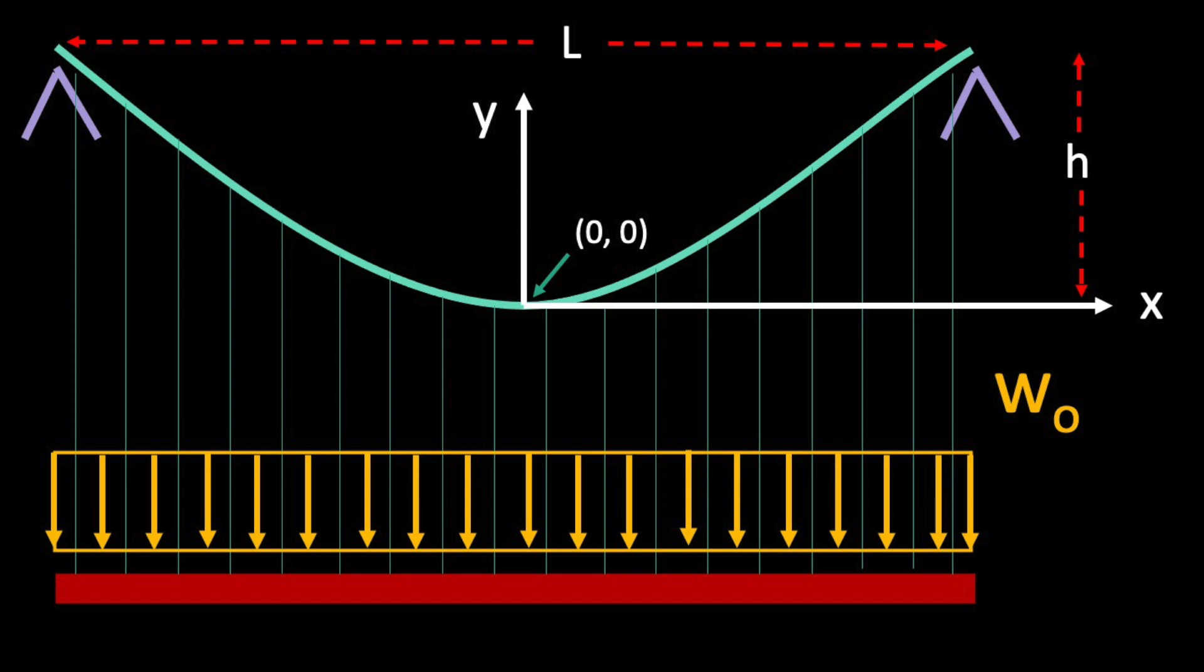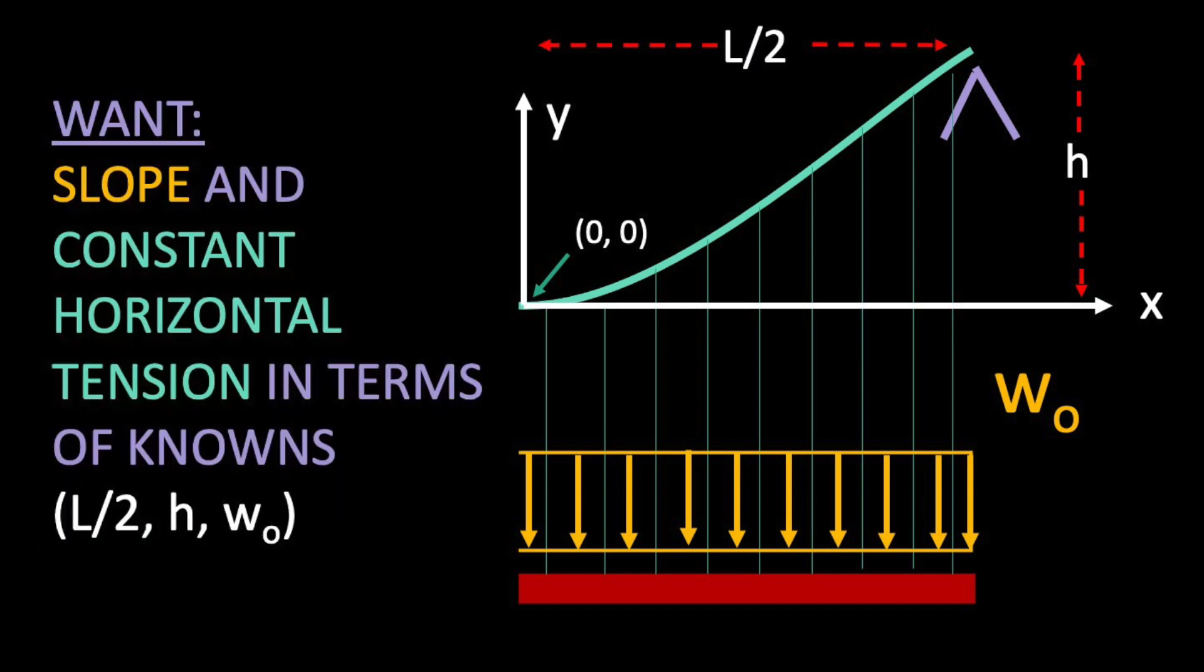Today, we'll use that equation to find an expression for our max tension. We want this expression to be in terms of things we know: the length of our cable span L, the cable sag H, and our uniform load value w naught. Note that I've put the origin in the middle of our cable. That's because our system is symmetric. There's no point using the full length when the tension will be the same on each side.